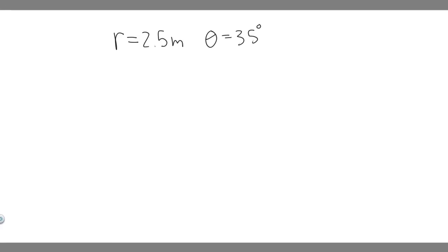In this problem, we're told a point is located in a polar coordinate system by the coordinates r equals 2.5 meters and theta equals 35 degrees. Find the x and y coordinates of this point, assuming that the two coordinate systems have the same origin.